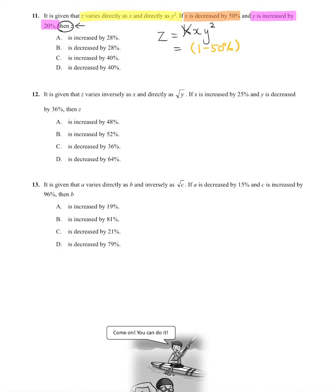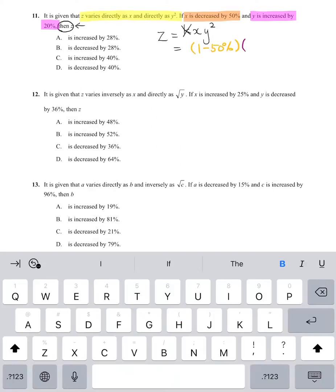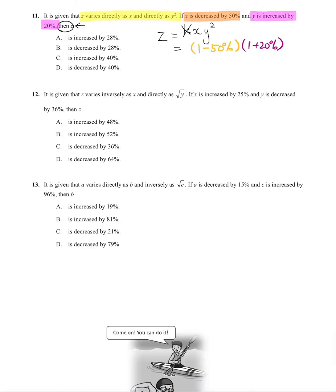So for X it's 1 minus 50%. We're going to skip writing the value for X. Y is increased by 20%, and it's Y squared, so you have to square the value of 1 plus 20%.